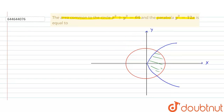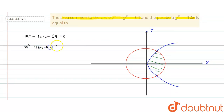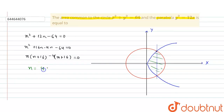Now we find the x-value of the intersection point by solving both equations simultaneously. In x² + y² = 64, we substitute y² = 12x, giving x² + 12x − 64 = 0. This factors as (x − 4)(x + 16) = 0, so x = 4 and x = −16. The relevant value is x = 4.